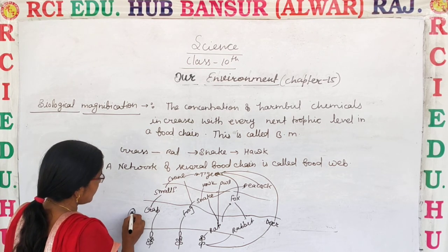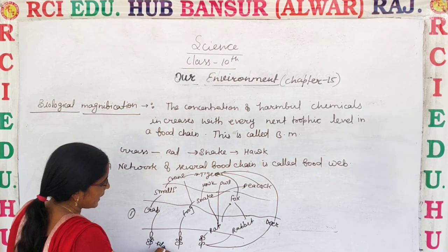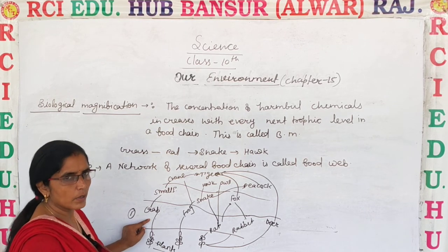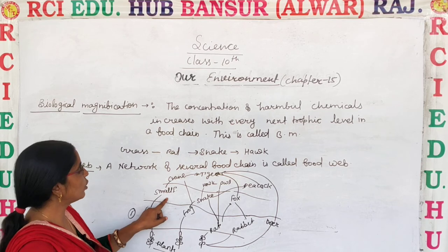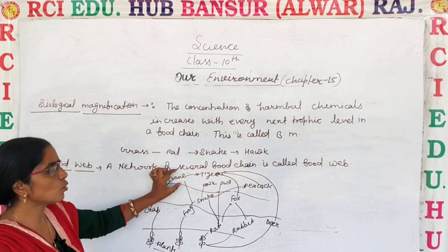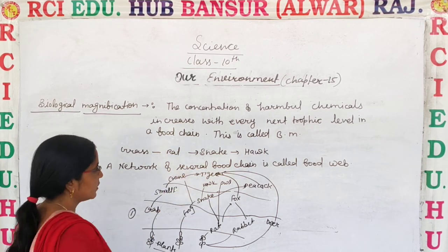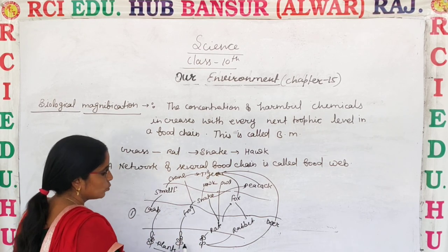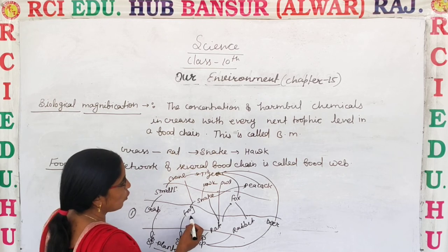Let's look at the first food chain: aquatic plants are eaten by the crab, crab is eaten by small fish, small fish are eaten by the crane, and crane is eaten by the tiger. The second food chain: plants are eaten by the frog, frog is eaten by the snake.